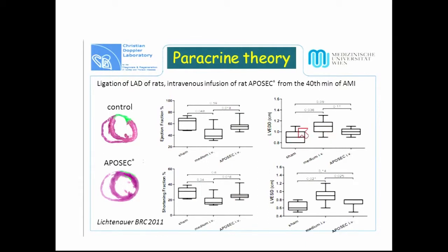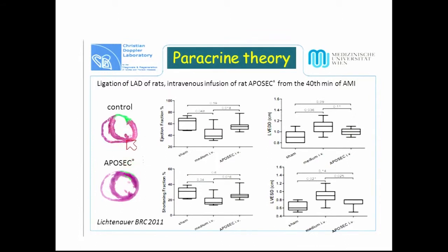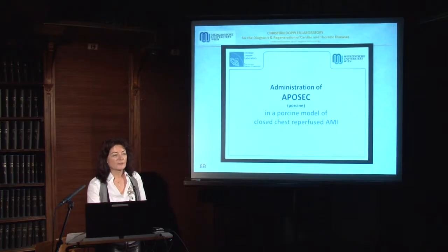The left ventricular end-diastolic diameter increased in the sham-operated, sham-treated animals compared with the sham-operated animals, but if the animals received APOSEC intravenously, the left ventricular dilation was not as pronounced compared with the medium-treated animals. Gross morphology showed a partially preserved left ventricular wall in the APOSEC-treated animals compared with the control rats, where we could see a thinned myocardial anterior wall consistent with acute myocardial infarction.